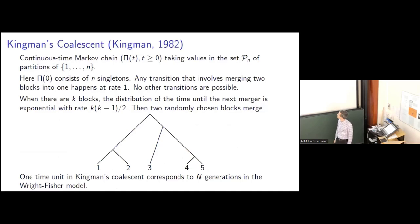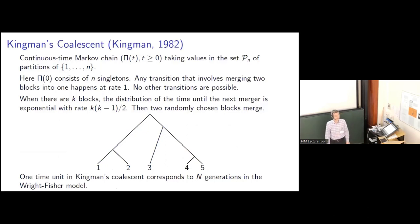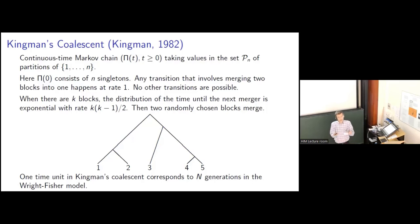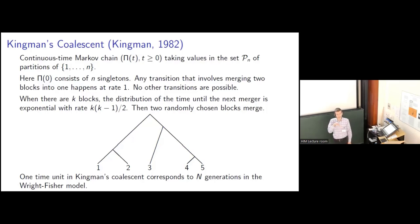It starts out at time zero from the partition of the integers one through N into singletons. And then, as time goes forward, each possible transition that involves two of the blocks of the partition merging into one happens at rate one, and those are the only allowable transitions. So if at some time the partition has K blocks, there are K choose two possible transitions, because there are K choose two pairs of blocks that could merge together. So the time that we have to wait until the next merger is exponentially distributed with a rate of K choose two, and then at that time we pick two blocks of the partition at random and merge them together.